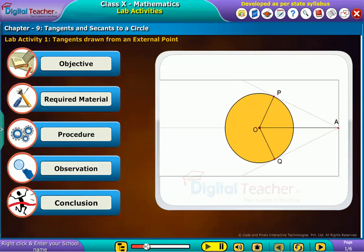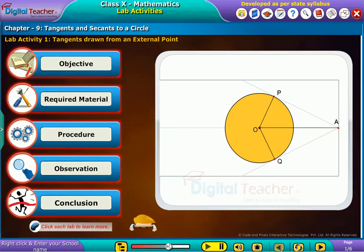Let us do a lab activity to verify that the lengths of tangents drawn from an external point to a circle are equal. Click each tab to learn more.